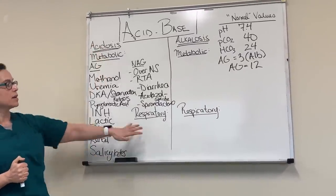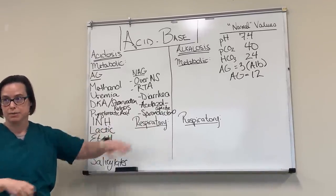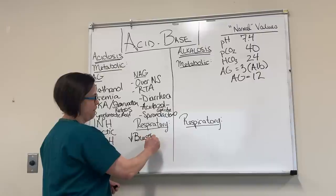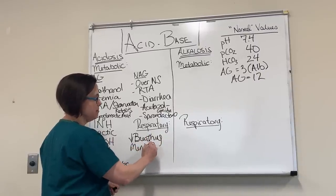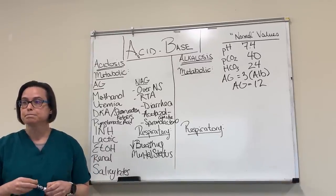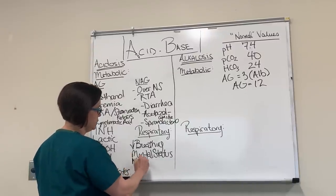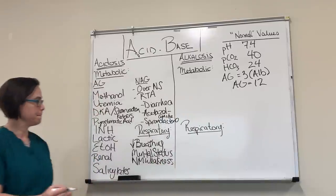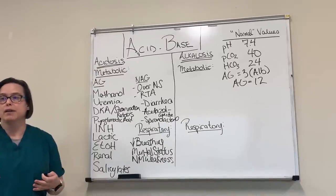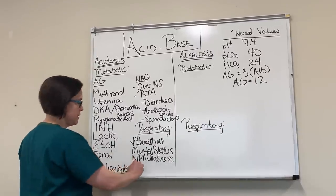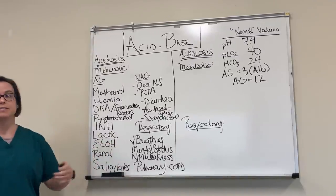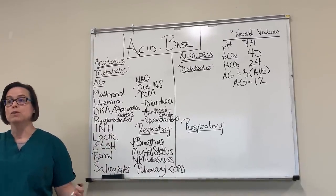Let's go from metabolic acidosis to things that cause a respiratory acidosis. What causes a respiratory acidosis? Not breathing enough. What things make you not breathe enough? Opioids — really any medicine that decreases your mental status. Neuromuscular weakness. And pulmonary problems — if we just don't have enough room for gas exchange. COPD is a great example. Think of it as either a pulmonary problem or a neuromuscular/neurologic problem in general.